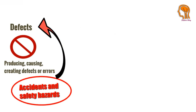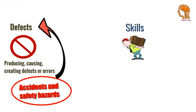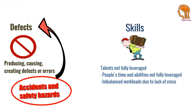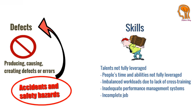The last type of waste, and the 8th one, is Skills — talents not fully leveraged. You can find this through people's time and abilities not being fully utilized, imbalanced workloads due to lack of cross-training, inadequate performance management systems, and incomplete job skills assessment prior to hiring.